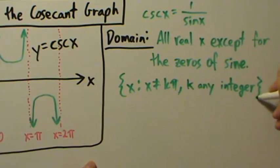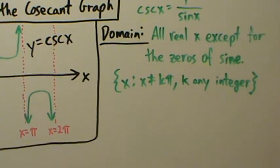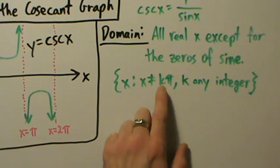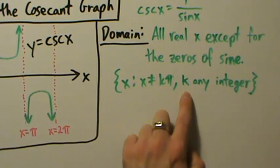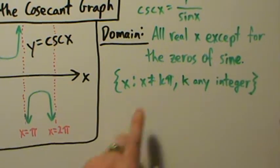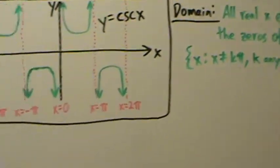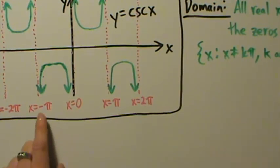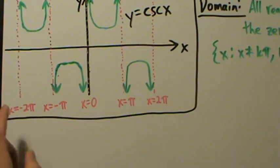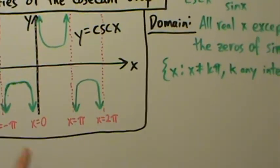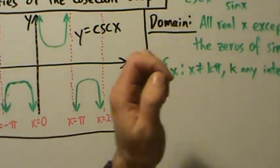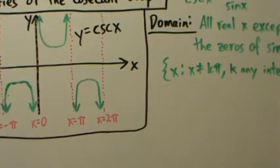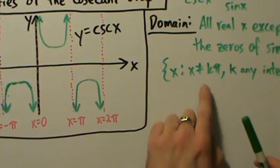This is just a short way of expressing an infinite list. If k is 0, then kπ is 0. If k is 1, then kπ is π. If k is 2, kπ is 2π. If k is negative 1, you get negative π; if k is negative 2, you get negative 2π; if k is 3, you get 3π; and so on and so forth. So the domain is all real values of x except all of these values.